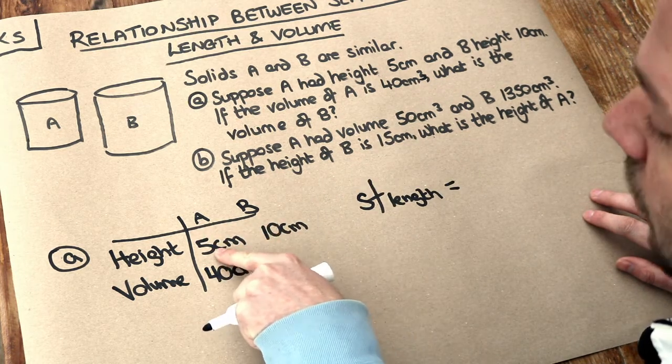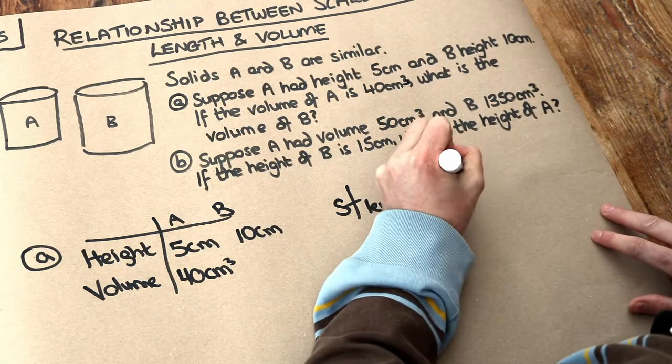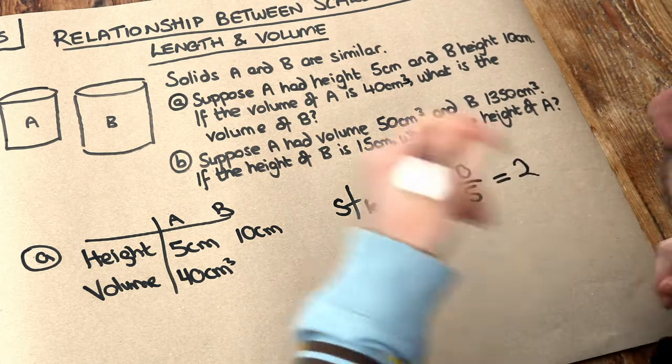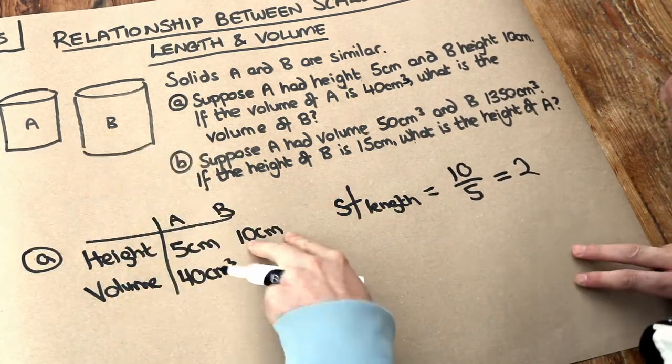Well, we can see going from solid A to solid B, the height is getting twice as big. 5 times 2 is 10. So we do 10 divided by 5. That gives us a scale factor of length of 2. All the lengths are becoming twice as big going from A to B.